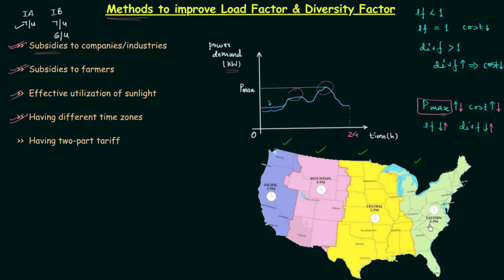The first section represents the Eastern Time Zone. The yellow section represents the Central Time Zone. The pink section represents the Mountain Time Zone. And the last section represents the Pacific Time Zone. If it is 6 PM in the Eastern Time Zone, then Central Time Zone has 5 PM — it is lagging by one hour. The Mountain Time Zone is lagging by two hours and the Pacific Time Zone is lagging by three hours. Now let us understand how the load factor and diversity factor improve by dividing the country into different time zones.